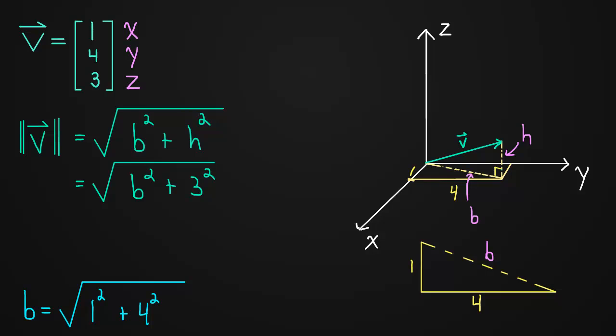Now that we have a term for b, let's go ahead and plug that in. So we have b, which is the square root of one squared plus four squared, and now b is being squared. And then plus three squared.